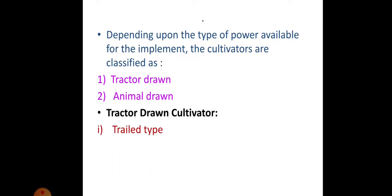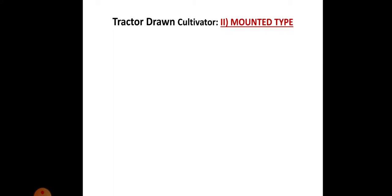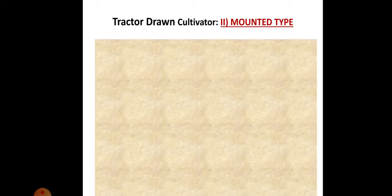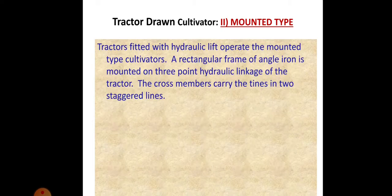Tractor-drawn cultivators are of trailed type and mounted type. Tractors fitted with a hydraulic lift operate the mounted type cultivators. A rectangular frame of angle iron is mounted on the three-point hydraulic linkage of the tractor. The cross-members carry the tines in two staggered lines.